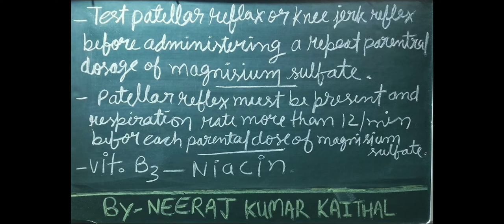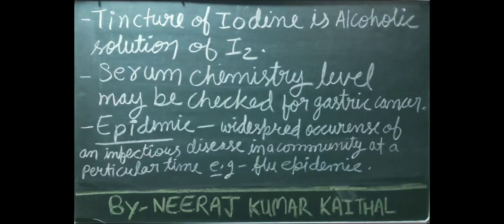Vitamin B3 is also known as niacin. Tincture of iodine is an alcoholic solution of I₂. Serum chemistry levels may be checked for gastric cancer. Epidemic is defined as the widespread occurrence of an infectious disease in a community at a particular time — for example, a flu epidemic.